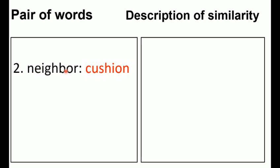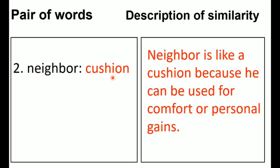Number two: neighbor is being compared to a caution. Description of similarity: a neighbor is like a caution because he can be used for comfort or personal gains. Again, these words are not written in your Moodle, so you need to copy this down in order to have a ready-made answer.